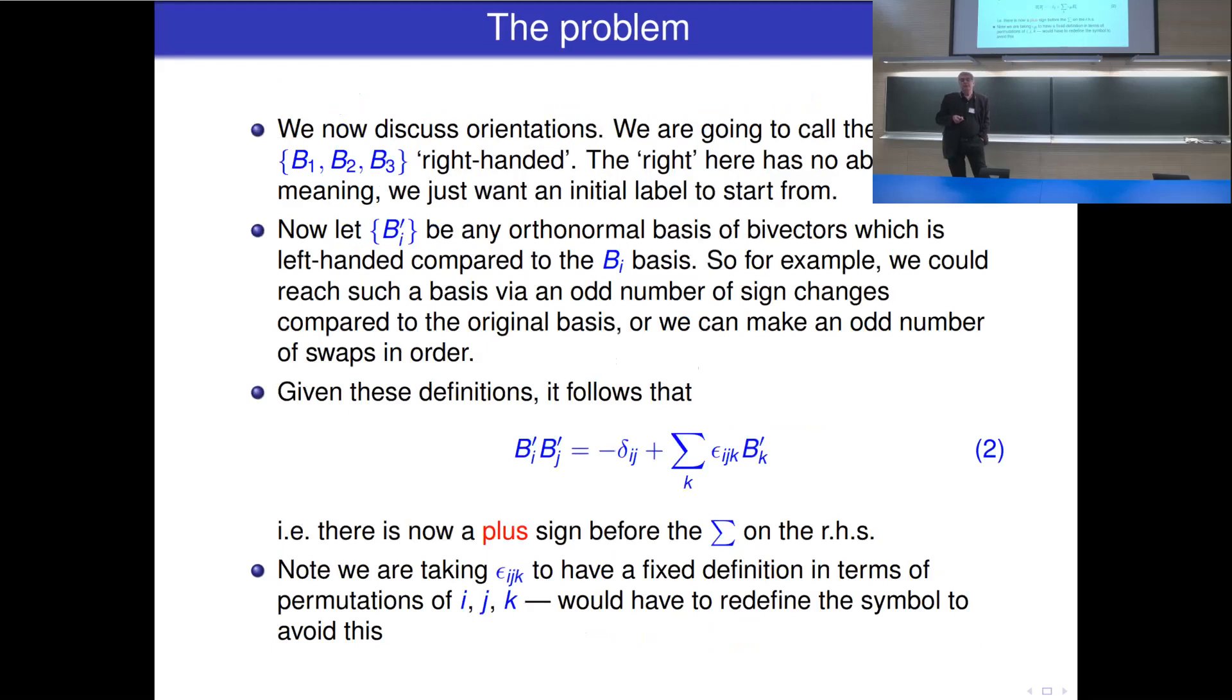And we now discuss orientations. We're going to call the set b1, b2, b3 right-handed. The 'right' here has no absolute meaning, just an initial label to start from. Now let b i dashed be any orthonormal basis of bivectors which is left-handed compared to the b i basis. For example, we could reach such a basis by an odd number of sign changes compared to the original basis, or you can make an odd number of swaps in order. Now, given these definitions, it follows that b i dashed b j dashed is minus delta i j, now there's a plus sign here before the sum over k epsilon i j k b k dashed. We call that form of the relation equation 2. There's now a plus sign in this position where there was a minus sign before. And I have to say, we are taking epsilon i j k to have a fixed definition in terms of permutations of i j k to just have this perfectly normal meaning.